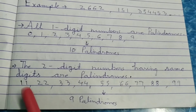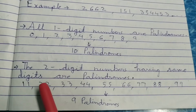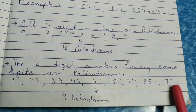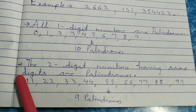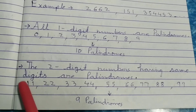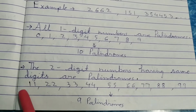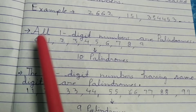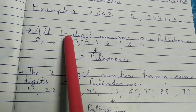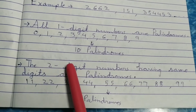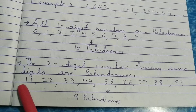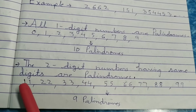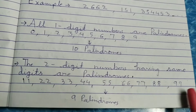Now, two-digit numbers which have the same digits are also palindromes — for example, 11, 22, 33, up to 99. We are not considering 00 because 00 basically means 0, which is a one-digit number. So for two-digit palindromes, we have only nine: from 11 to 99.